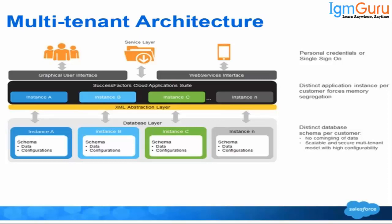On a high level: the end user sends a request that goes to their application suite instance — say Instance A — then to the database layer, and the data comes back to Instance A for the user to see. Multiple users can log in simultaneously within Instance A — say 100 users with 100 licenses — without affecting other instances B or C. We'll discuss in detail how Salesforce controls and limits this so one instance cannot affect another.